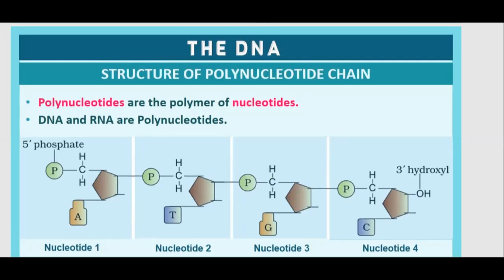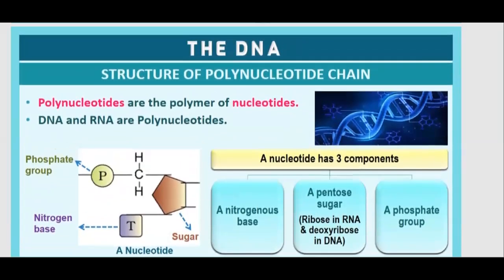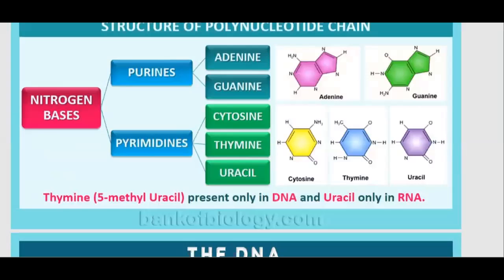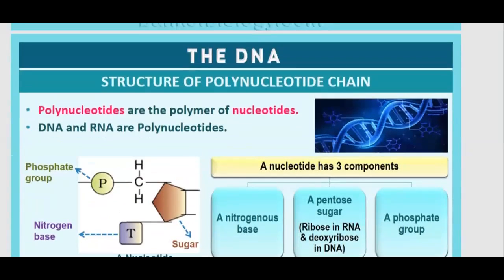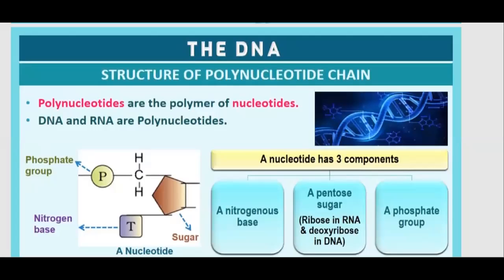What are polynucleotides? Polynucleotides are polymers of nucleotides, and they have three components. A nucleotide has three components: first, a nitrogenous base; second, a pentose sugar; and third, a phosphate group. Students, if there is no phosphate in a nucleotide, it will be called a nucleoside.